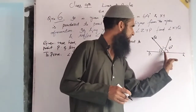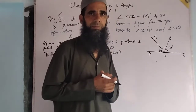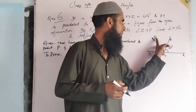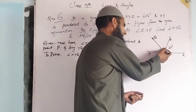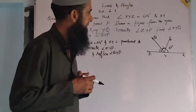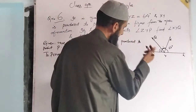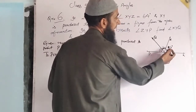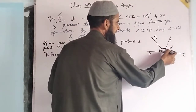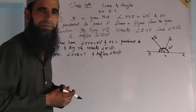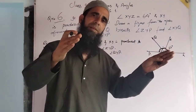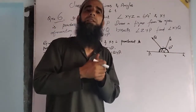XY is produced to P, so this gives us a straight angle of measure 180 degrees. If we have a line segment and that line segment is produced, then we can get a line, and the angles on a straight line sum to 180 degrees.